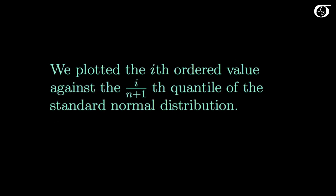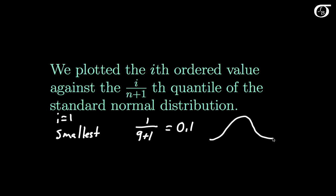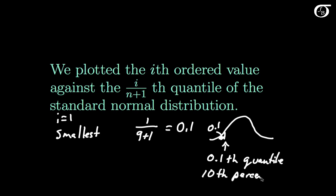What we just did was plot the i-th ordered value — sometimes called the i-th order statistic — against the i over n plus 1 quantile of the standard normal distribution. So for example, when i was 1, we took the smallest value in our sample and plotted it against 1 over 10, or 0.1 — that is, the 0.1th quantile of the standard normal distribution, also called the 10th percentile.